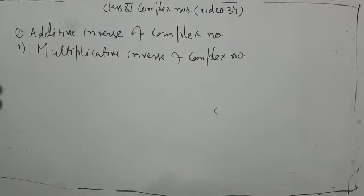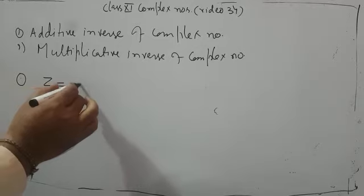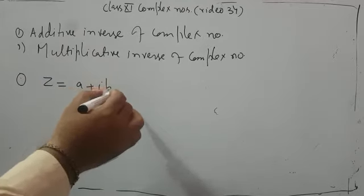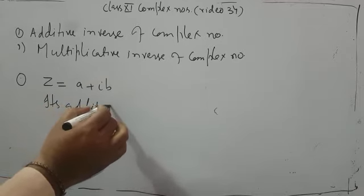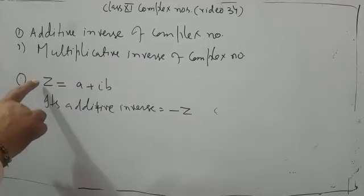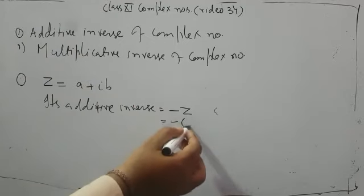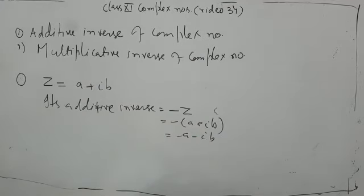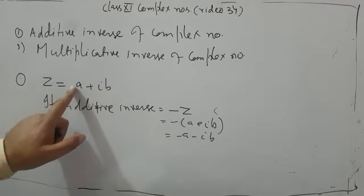Suppose z = a + ib is a complex number. Its additive inverse will be minus z, which means we negate z. Since the value of z is a + ib, opening the bracket with minus: minus a minus ib. So if the complex number is a + ib, its additive inverse is −a − ib.